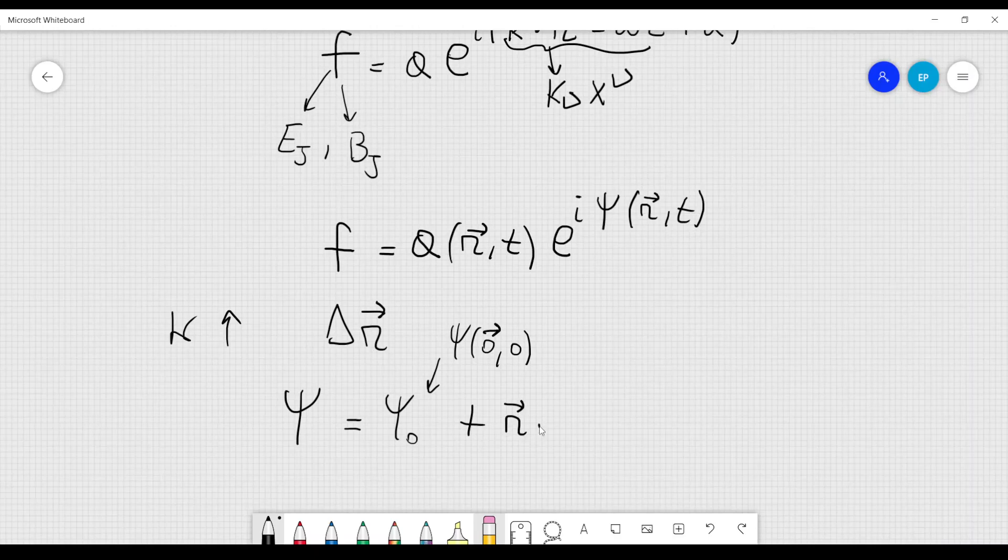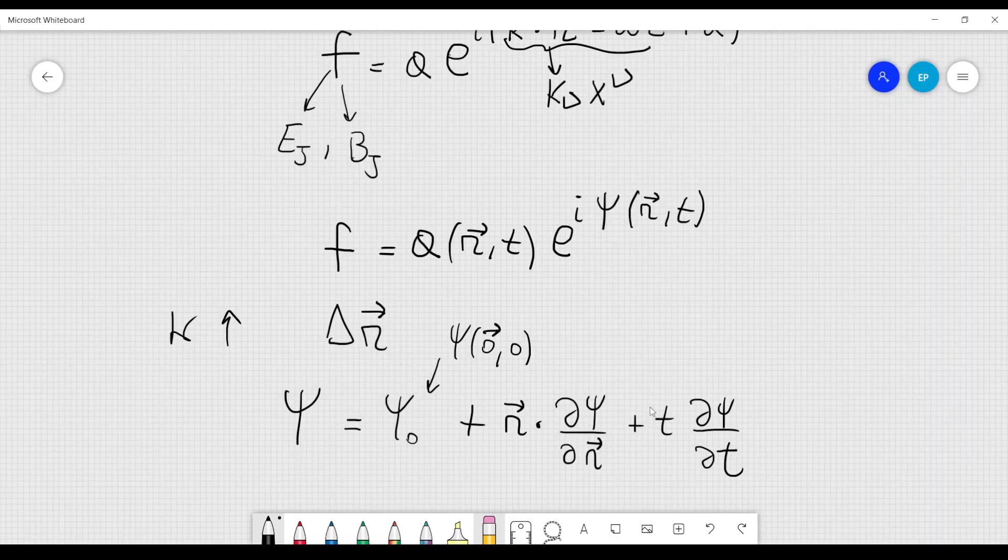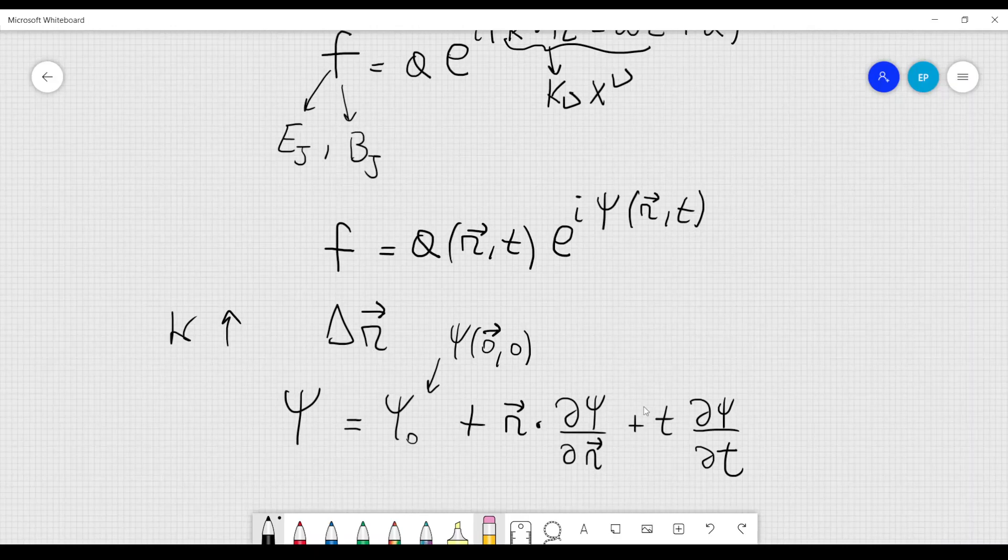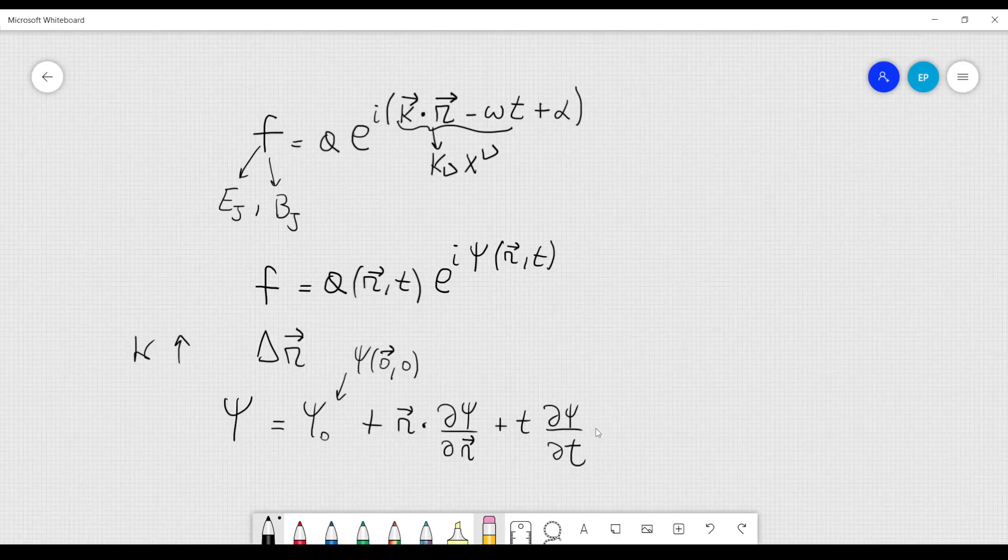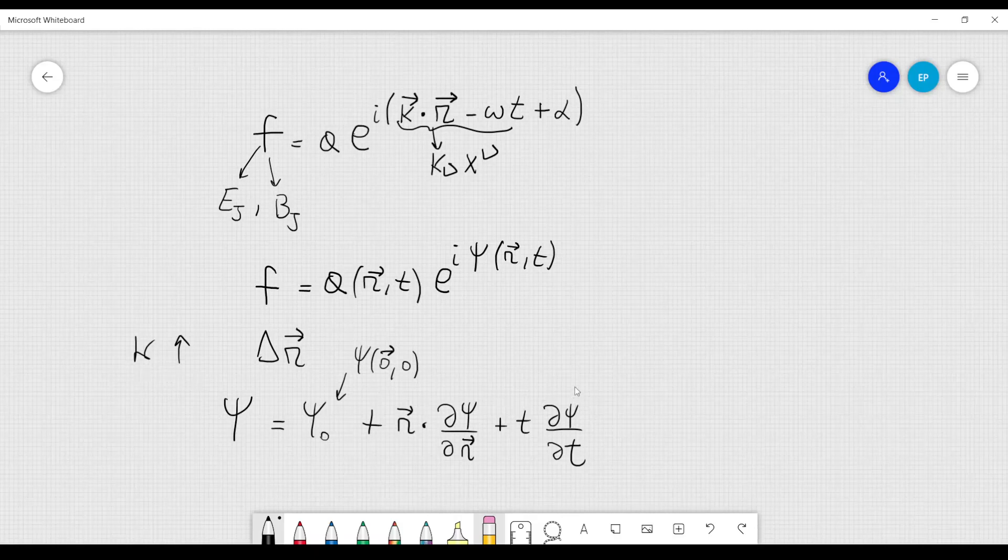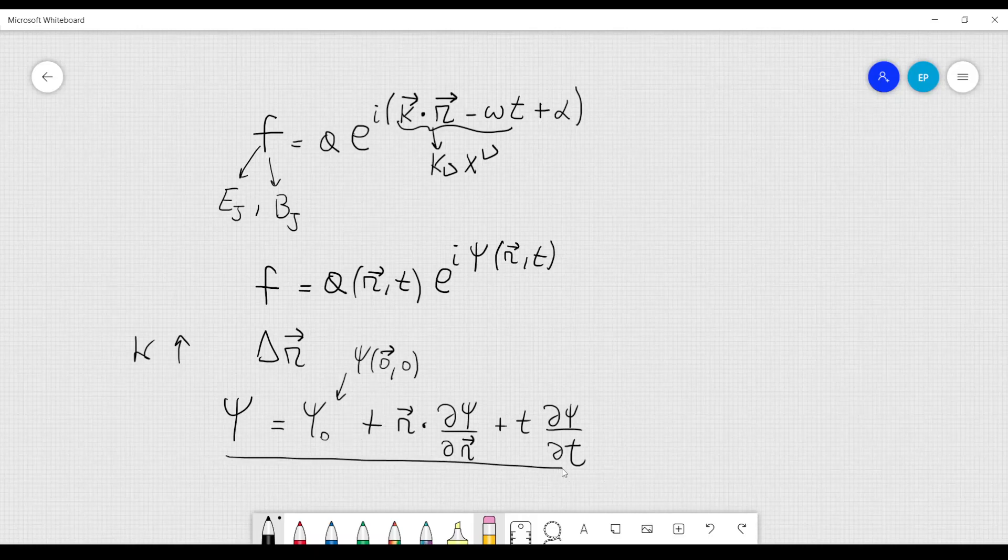plus r dot product with d psi over dr, which is the gradient of psi, plus t d psi over dt. So I have implicitly chosen the origin for coordinates and time within the space region and time interval under consideration. And from this expression here for psi, now we are assuming that we are considering almost plane waves, so we are in the limit, where k is large.